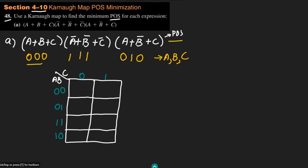So here we have 0,0,0 — this is the first entry, so here I write 0. Similarly, triple 1 (1,1,1) is here and I write 0, because this is the complete opposite of the sum of products simplification. Similarly 0,1,0 is here and I write 0. All the other cells will be ones, just as in sum of products the remaining terms were zeros while the specified binary value entries were ones.